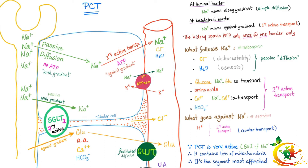Let's talk about glucose. Glucose moves at the apical border — also called the brush border or luminal border — via the sodium-glucose transporter, which is secondary active transport. But from the tubular cell to the peritubular capillaries, it uses the GLUT glucose transporter, which is facilitated diffusion — passive, not active.